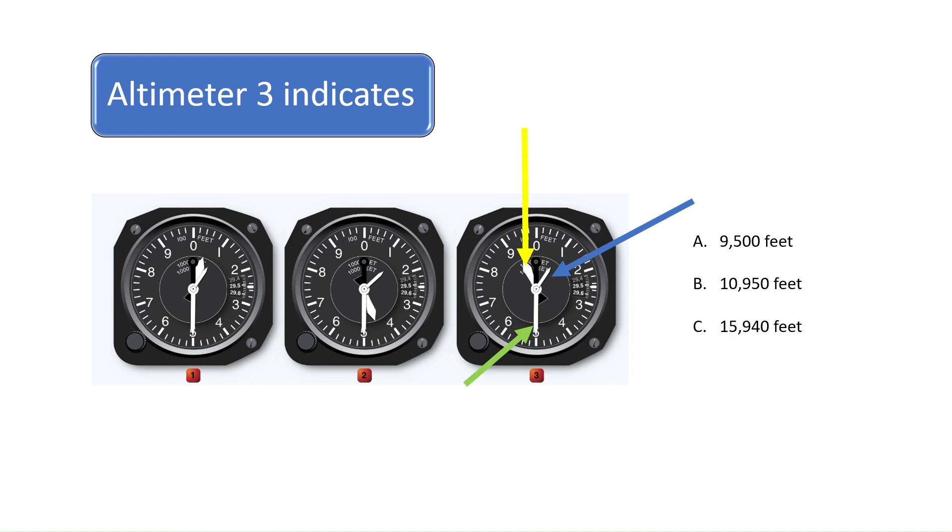Since the medium arrow is just past the nine and the long hand is pointing to the five, this altimeter indicates that the aircraft is at 9,500 feet. Altimeter 1 is reading 10,500 feet and altimeter 2 is showing 14,500 feet. The correct answer is A.